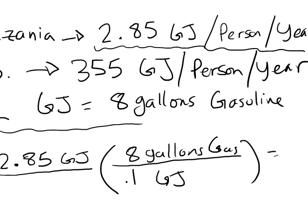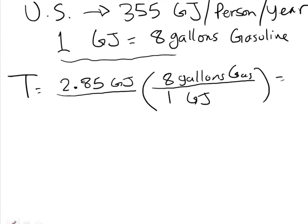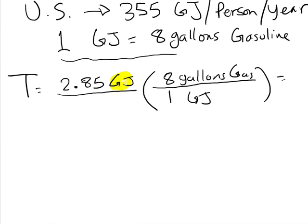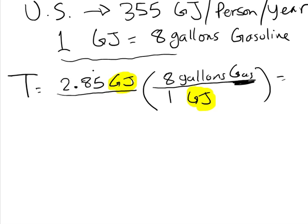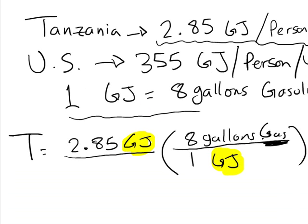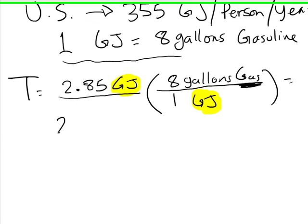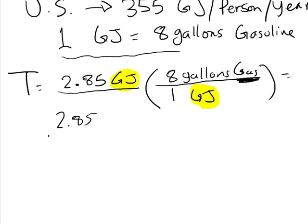And so this factor labeling sets up pretty nicely, recognizing we have gigajoules up top, cancelling out with gigajoules in the bottom. And we'd be left with our gallons of gasoline. So what this shows us is we take 2.85 and multiply by 8 and divide by 1. So if I wanted to do that longhand, I could take 2.85 and I'm going to multiply that by 8 gallons.